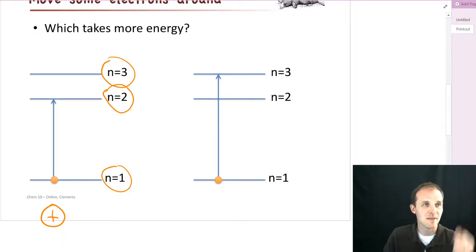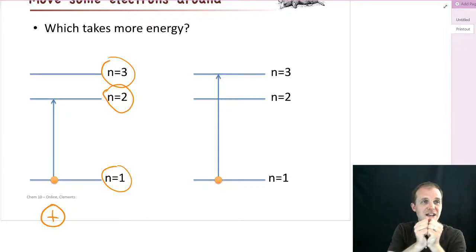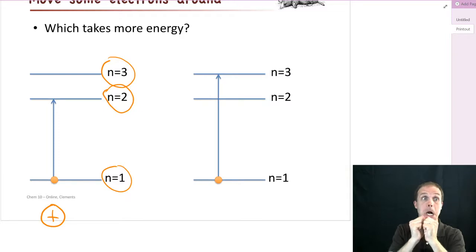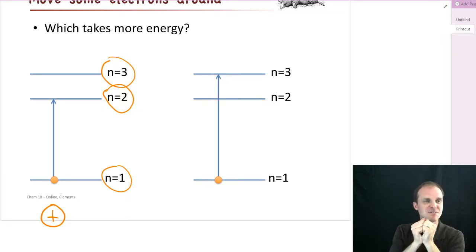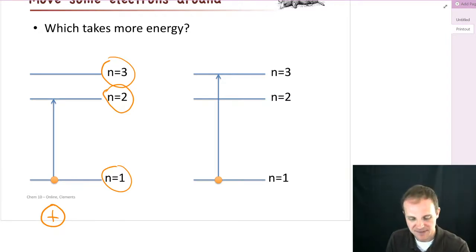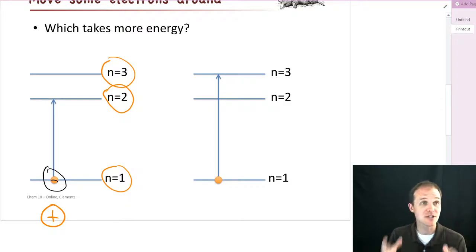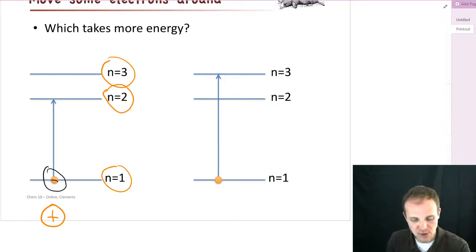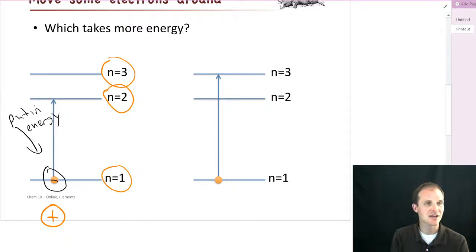Imagine you've got two magnets really close to each other. What do you have to do to move those two magnets apart? It takes a lot of energy. You have to put in a bunch of energy to get those magnets to separate. So just like the magnets, these negatively charged electrons and these positively charged protons want to be near each other. And if you want to separate them, it takes a little bit of work — we have to put in energy in order to get that electron to move up.